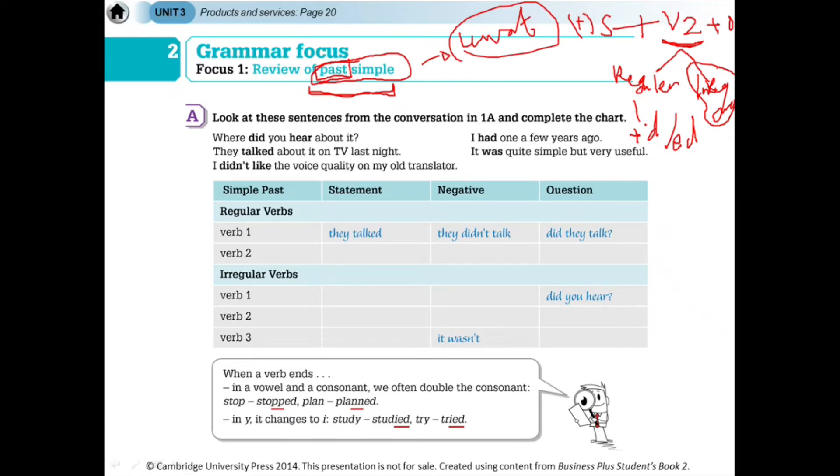For example, verb 1 is 'talk.' They speak. If the speaking is in the past, then talk is added with ED - talked. This is a regular verb that just needs D or ED added. But there's also 'like' - like just adds D. But there are also irregular verbs.